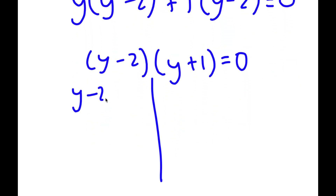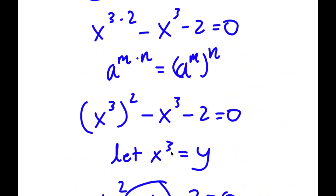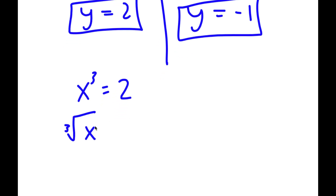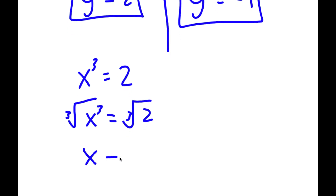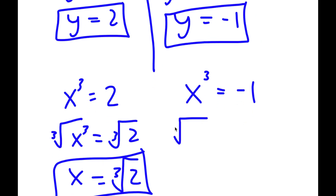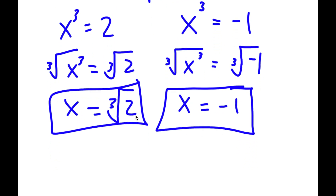This gives me two equations: y minus 2 equals 0 and y plus 1 equals 0. So y equals 2 and y equals negative 1. Recalling that we let x to the power of 3 equal y and we have two values of y: for y equals 2, x to the power of 3 equals 2. Taking the cube root on both sides, x equals the cube root of 2. For y equals negative 1, x to the power of 3 equals negative 1. Taking the cube root on both sides, x equals negative 1. So my two solutions are the cube root of 2 and negative 1.